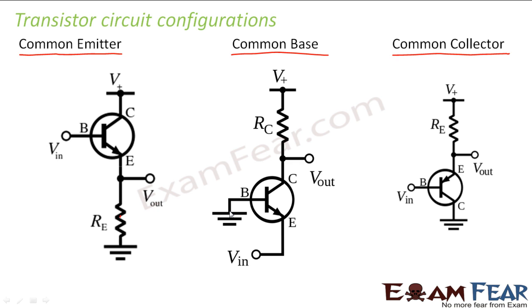So always remember that the one which is common with the other two is always grounded. So here your emitter is grounded, so it is common to base and collector. In this case the base is grounded, so base is common to emitter and again base is common to collector.